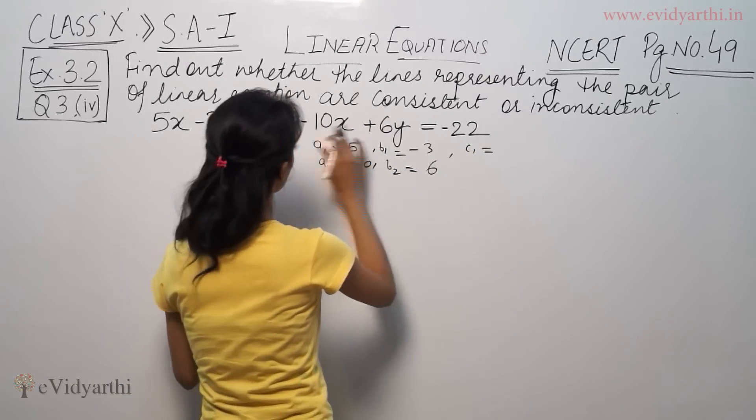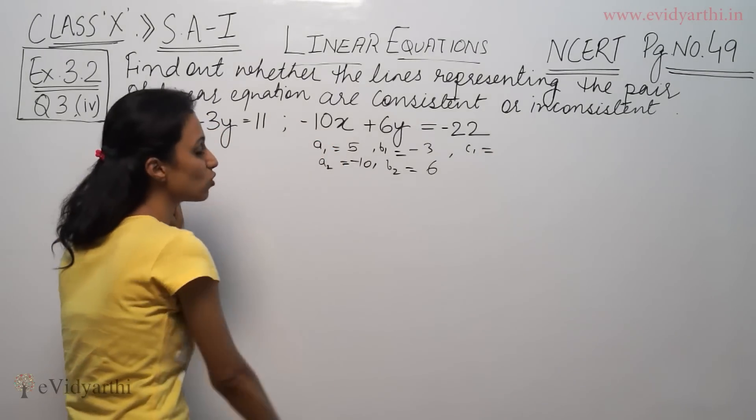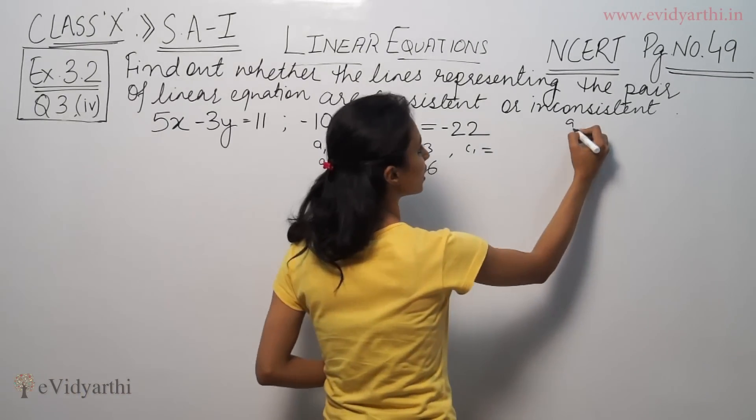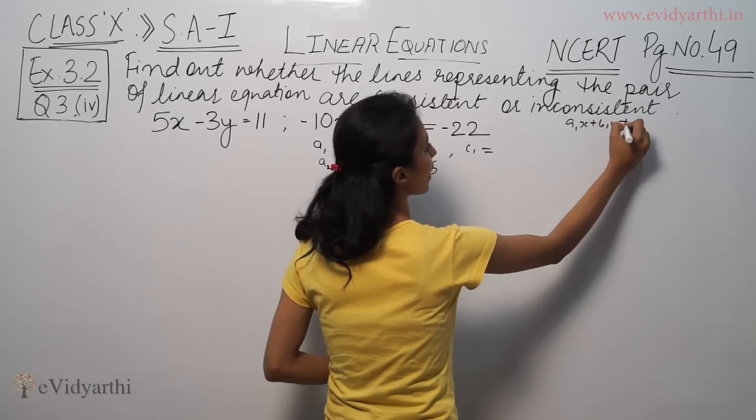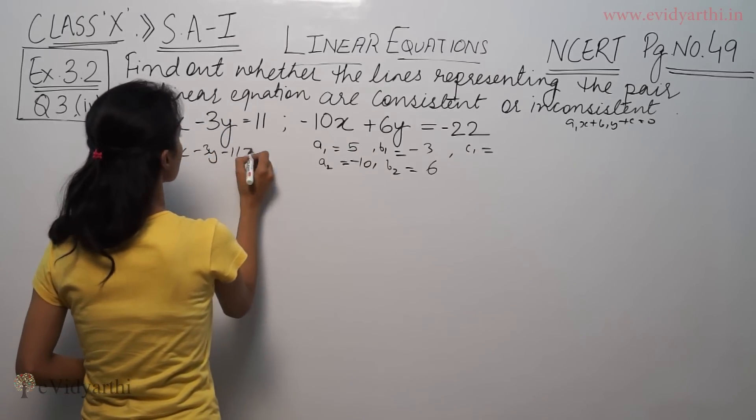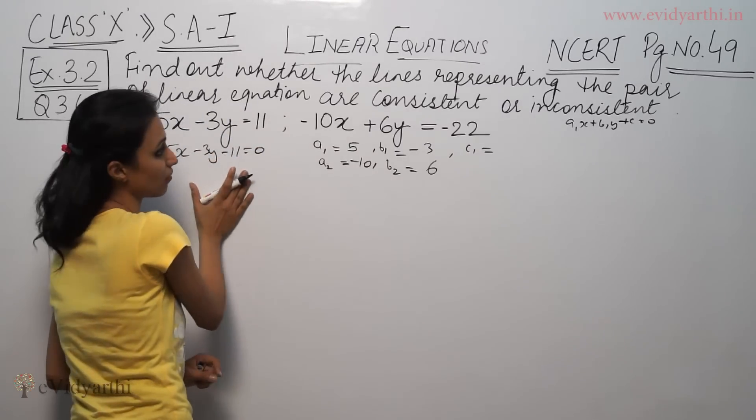c1 we have 11. When you see c1 and c2, we have to take this equation here. Basically, we have a general equation, a1x plus b1y plus c1. So if we take this equation first, this is minus 11 equal to 0.